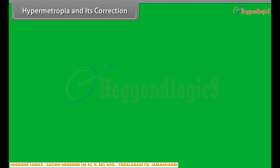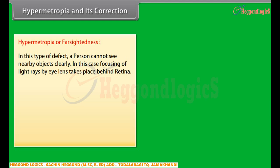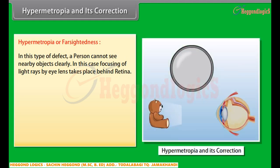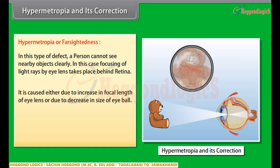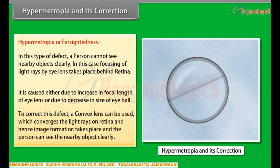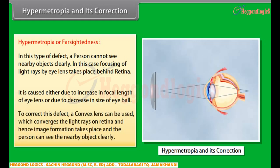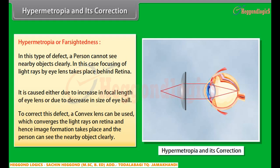Hypermetropia and its correction — in this type of defect, a person cannot see nearby objects clearly. In this case, focusing of light rays by the eye lens takes place behind the retina. It is caused either due to increase in focal length of the eye lens or due to decrease in size of the eyeball. To correct this defect, a convex lens is used which converges the light rays on the retina, and hence image formation takes place and the person can see nearby objects clearly.